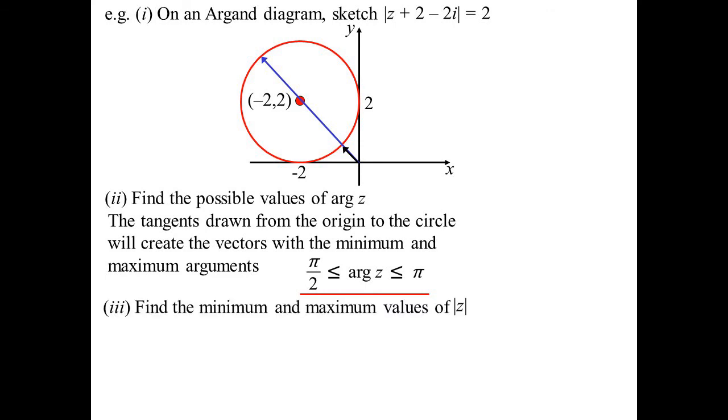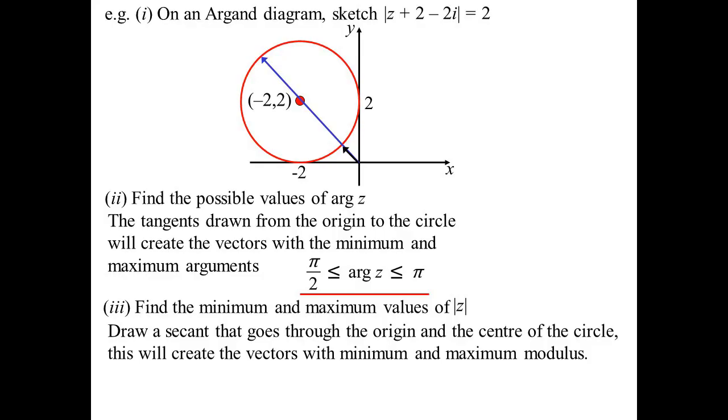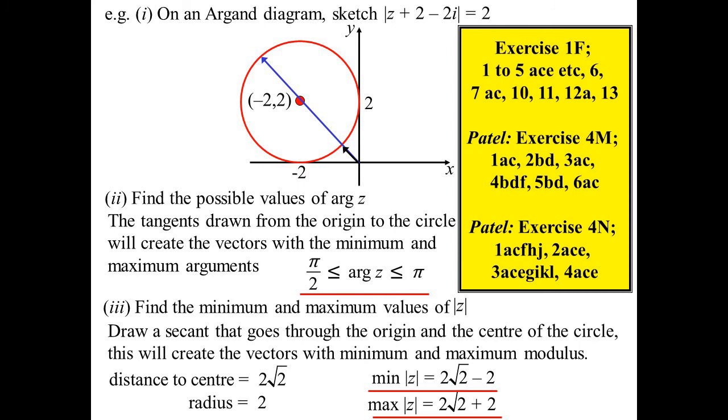What about if it was minimum, maximum values of mod z? We draw a line through the center. Where it meets the circumference will give you the minimum and the maximum arguments. How far is that? Well, we can work out the distance to the center, and we know how far the radius is. Distance to the center is 2 root 2. We know the radius is 2. Therefore, the minimum must be 2 root 2 minus 2, and the maximum must be 2 root 2 plus 2. When too much fun can never be enough, eh?